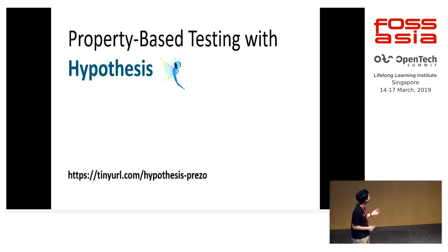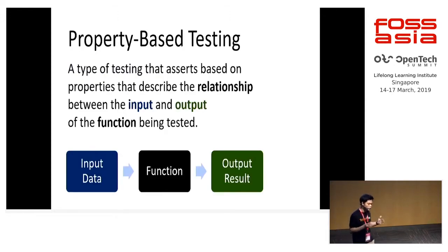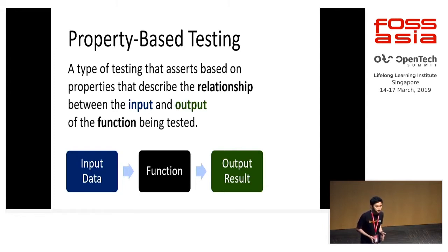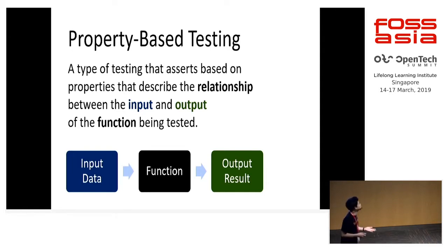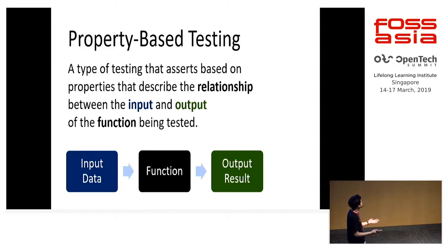I talked about property-based testing with Hypothesis. But today, I'd like to focus more on the essentials — what really is property-based testing, if you want to dissect it a bit. So I tried to define it: it's a type of testing that asserts based on properties that describe the relationship between the input and the output of the function that is being tested.